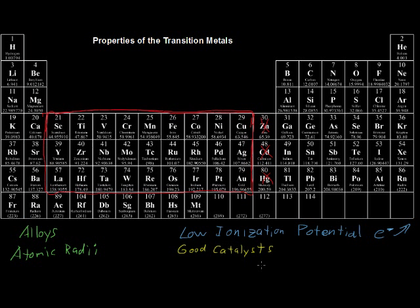It's because they can have different oxidation states, and that's why they are good catalysts. And finally, they can make compounds, or the compounds of the transition metals can be paramagnetic or diamagnetic.